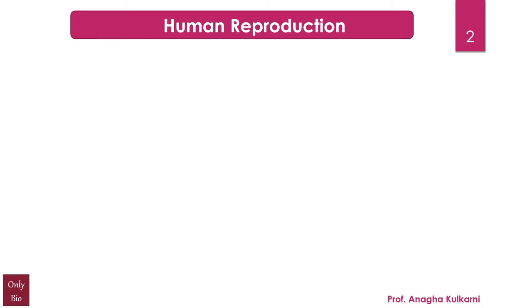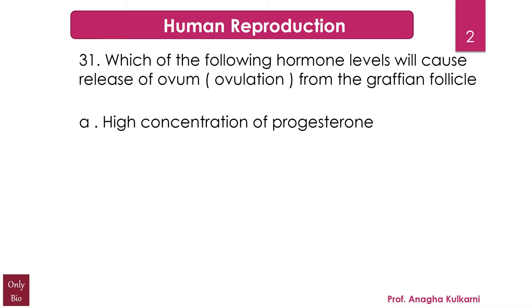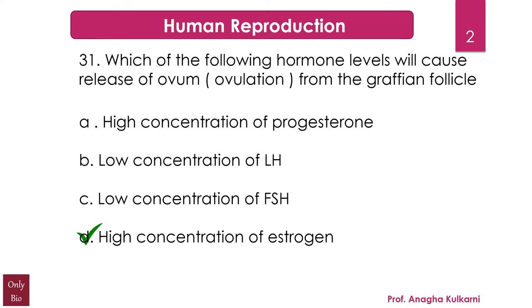This question relates to the chapter Human Reproduction. The question is: which of the following hormone levels will cause the release of ovum (ovulation) from the Graafian follicle? Options: A) high concentration of progesterone, B) low concentration of LH, C) low concentration of FSH, D) high concentration of estrogen. The correct answer is D — high concentration of estrogen.